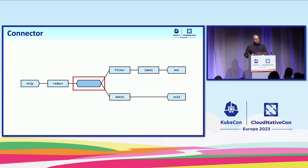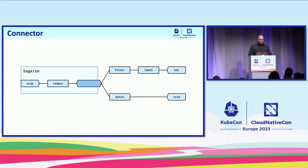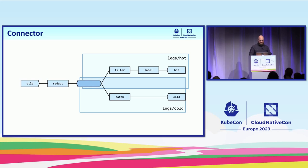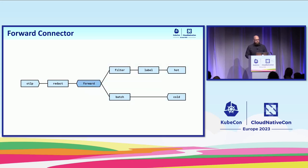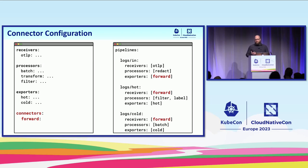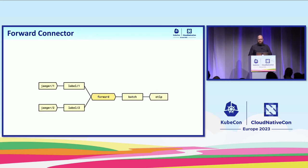What we want is something that can fulfill the requirements of being an exporter in the first pipeline and simultaneously fulfill the requirements of being a receiver in the other pipeline — and all we really want it to do is just pass the data along. So in the simplest case, this is a connector. It's an exporter and a receiver at the same time in different pipelines. This is specifically the forward connector — it's called the forward connector because we are just passing data along.